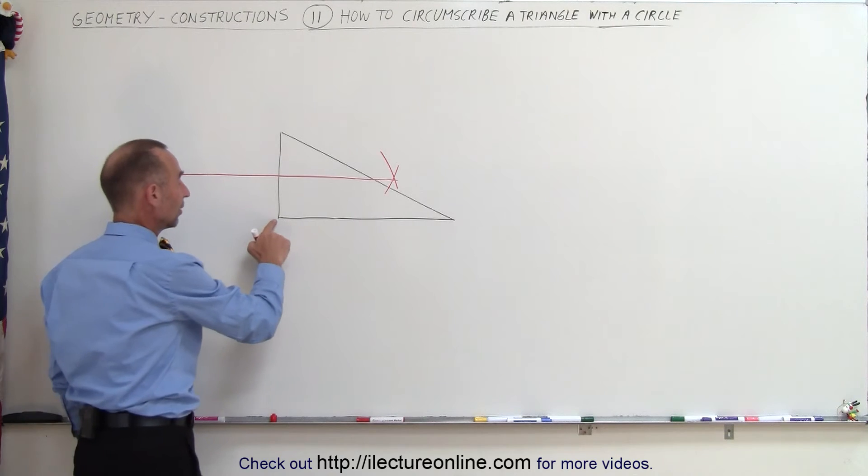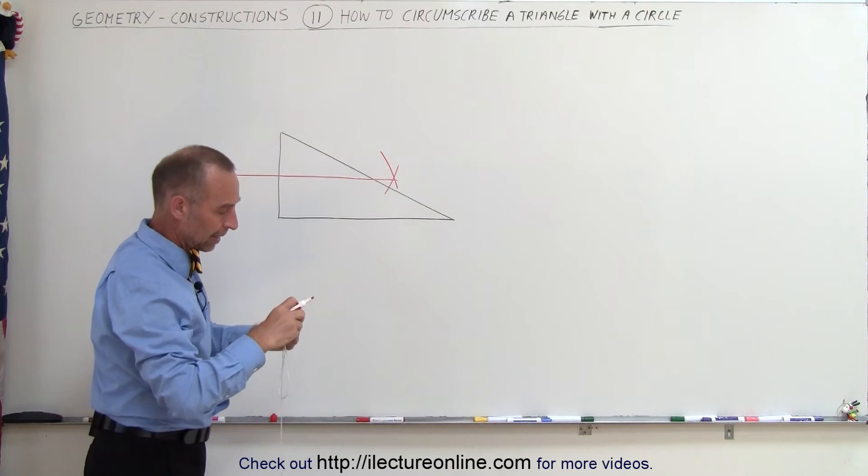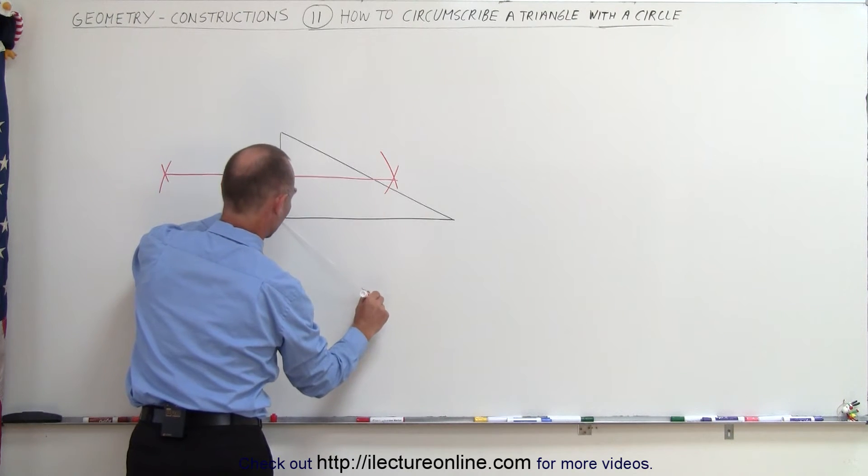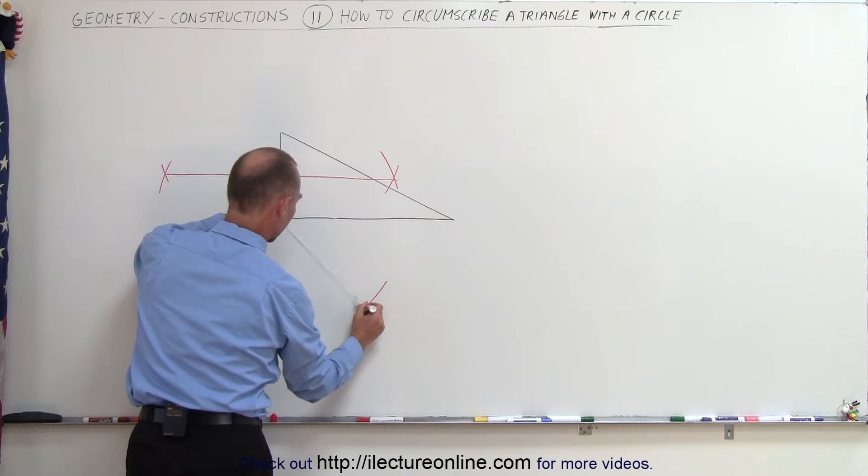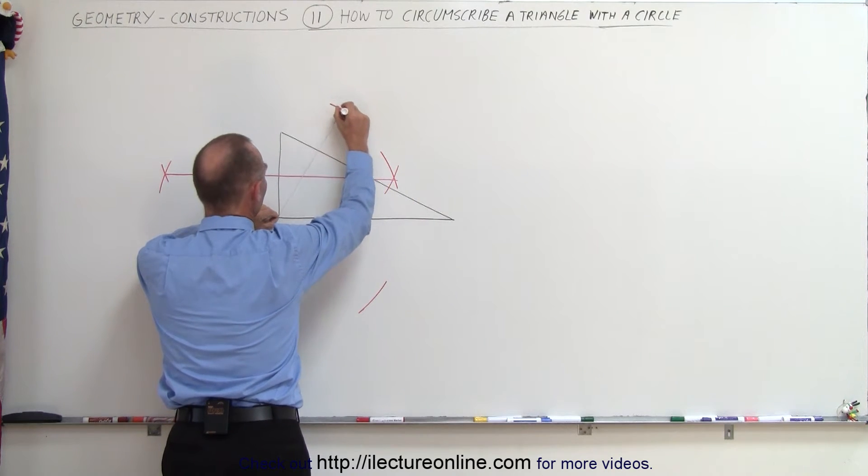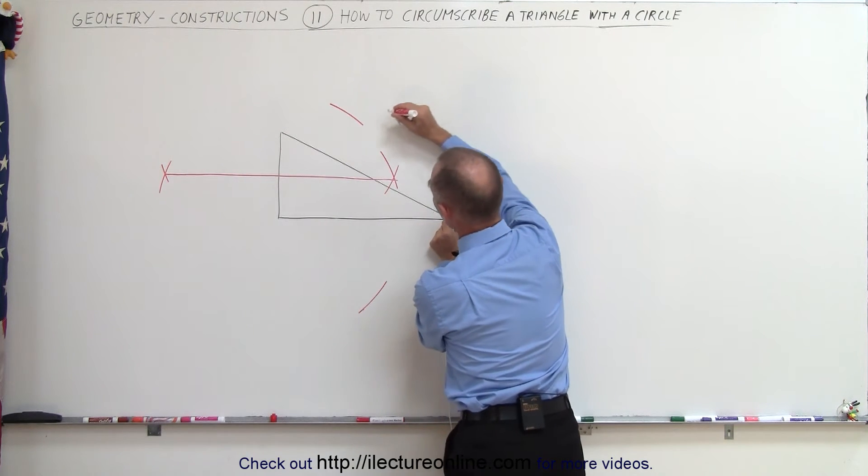Now we do the same with this side of the triangle. Again, use a compass. Go to one of the points like this and draw an arc. Come up here and do the same. Then come to this point and draw an arc.